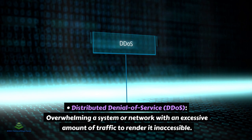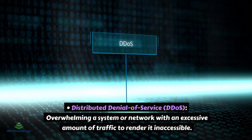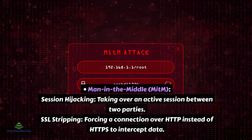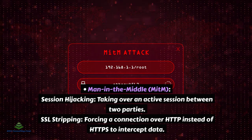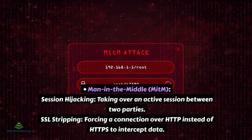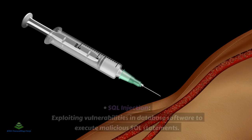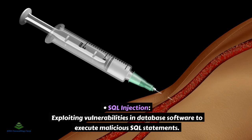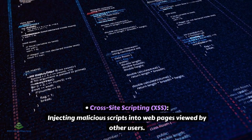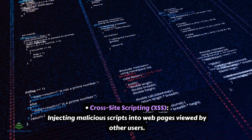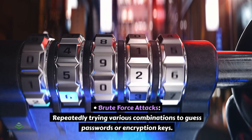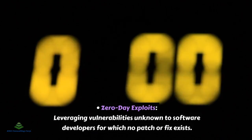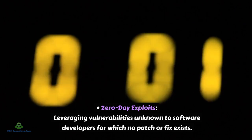Distributed denial of service (DDoS) — overwhelming a system or network with excessive traffic to render it inaccessible. Man-in-the-middle (MITM) session hijacking — taking over an active session between two parties. SSL stripping — forcing a connection over HTTP instead of HTTPS to intercept data. SQL injection — exploiting vulnerabilities in database software to execute malicious SQL statements. Cross-site scripting (XSS) — injecting malicious scripts into web pages viewed by other users. Brute force attacks — repeatedly trying various combinations to guess passwords or encryption keys. Zero-day exploits — leveraging vulnerabilities unknown to software developers for which no patch or fix exists.